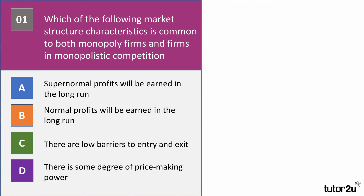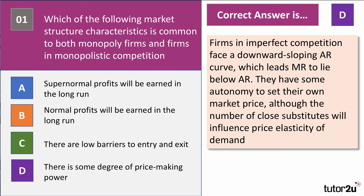Which of the following market structure characteristics is common to both monopoly firms and firms in monopolistic competition? The answer is D. Both market structures — firms in any form of imperfect competition — face a downward sloping average revenue curve, which means the marginal revenue curve will lie below the average revenue curve. Firms have some discretion over the price they charge, although influenced by the level and elasticity of the demand curve.